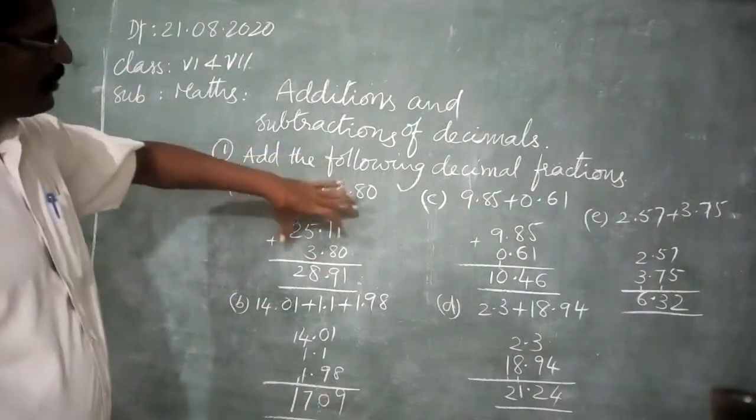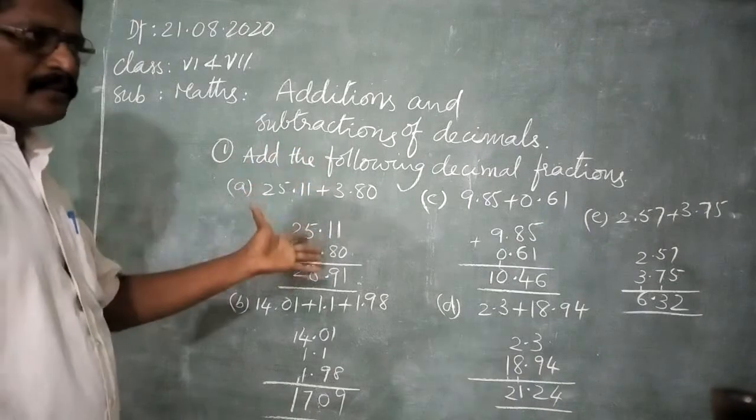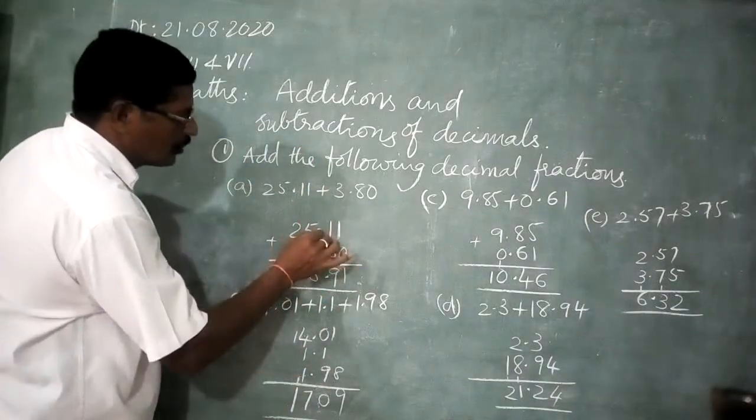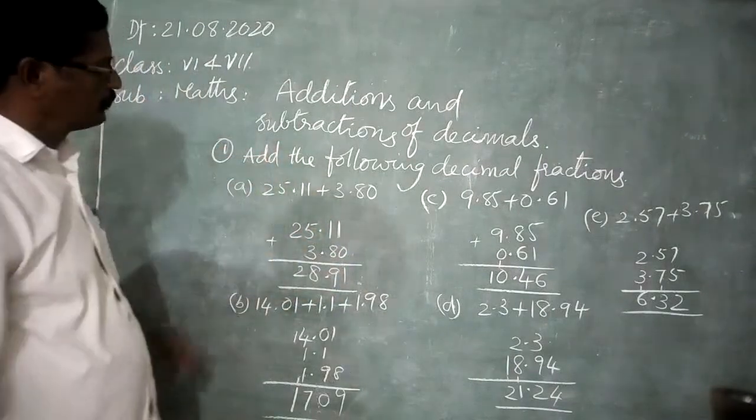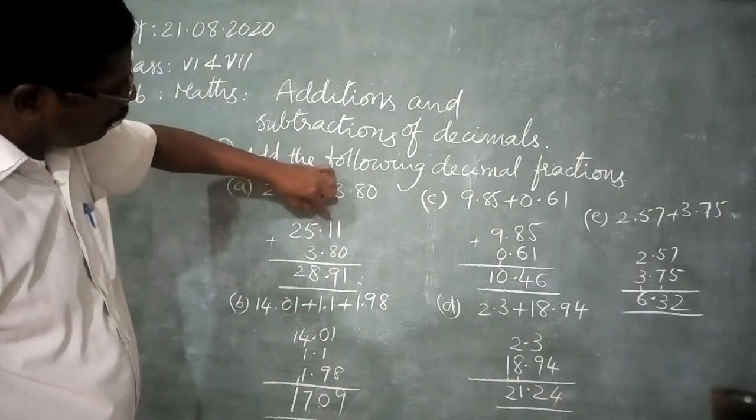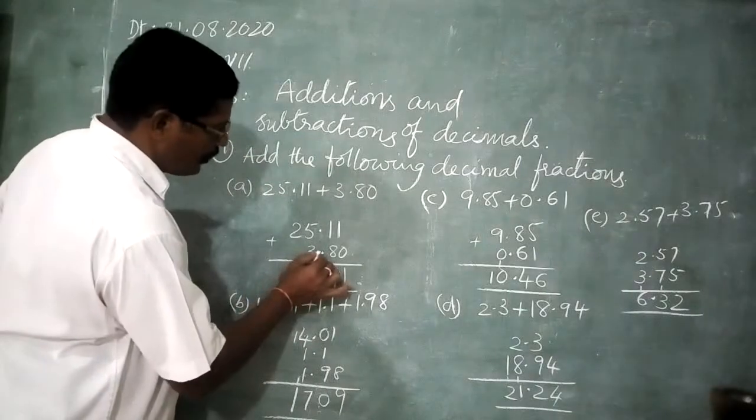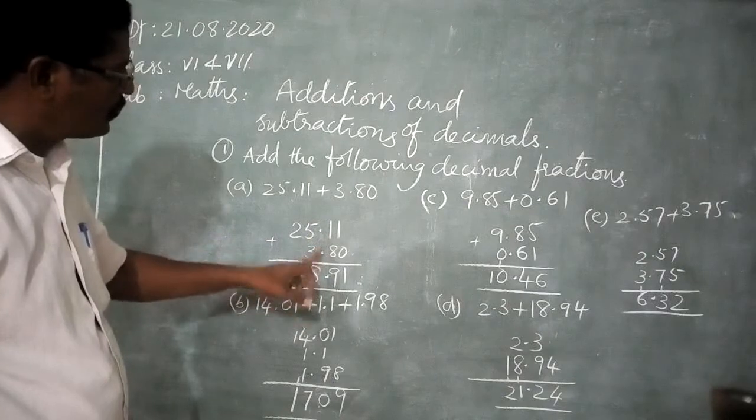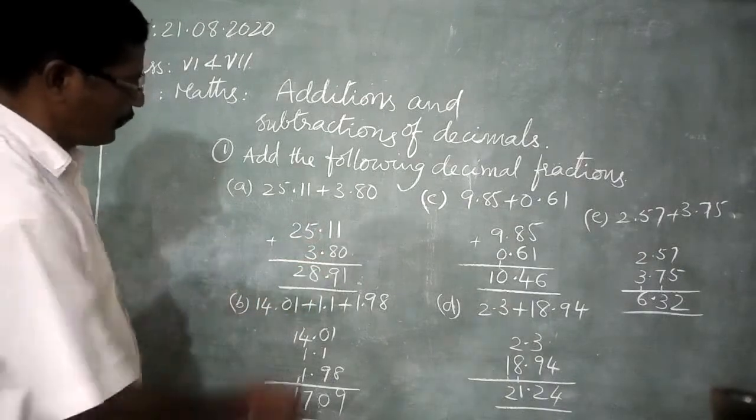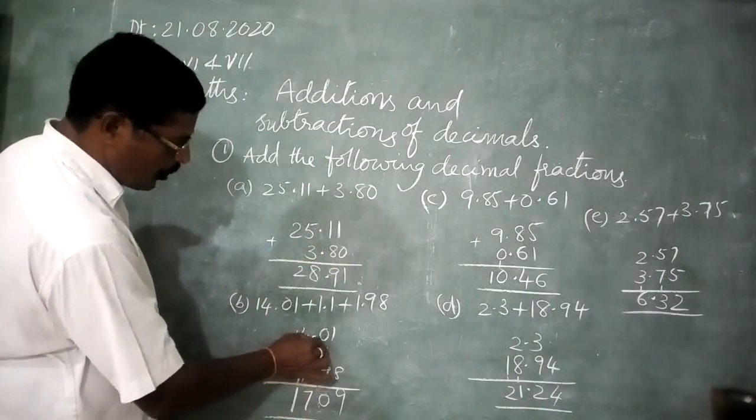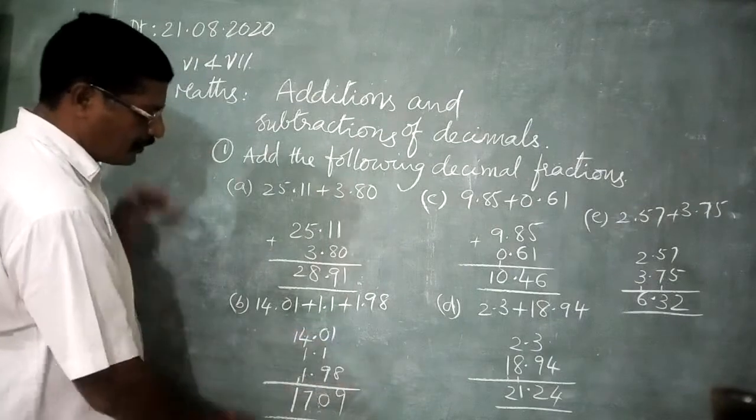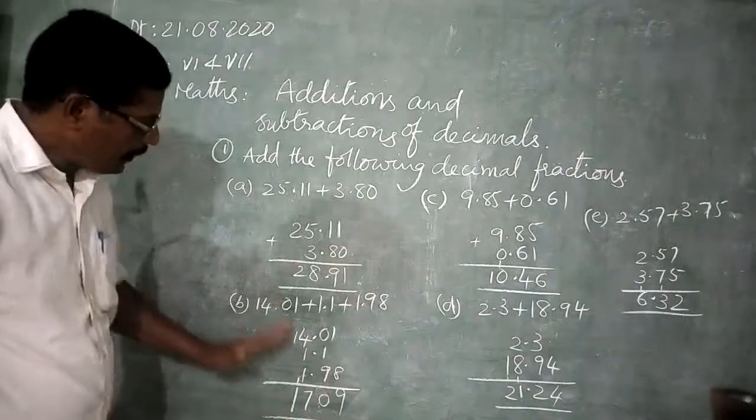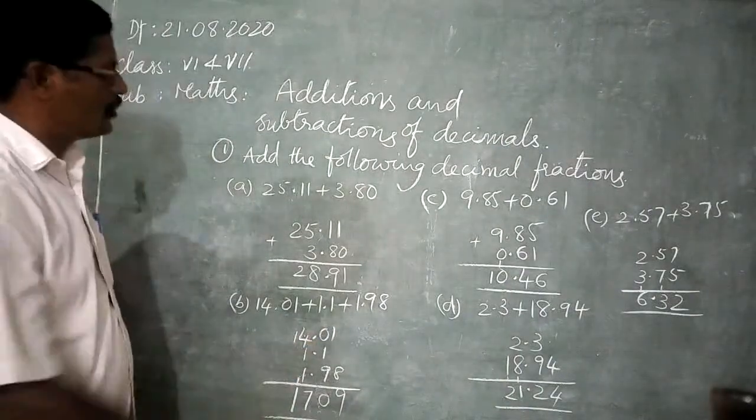If we add, in the addition of decimals or subtractions, this decimal point is very important. 25.11, 3.80. Quite like this. Decimal points. Next one. 14.01. Next. 1.1. It means the place values. Place values. Here.